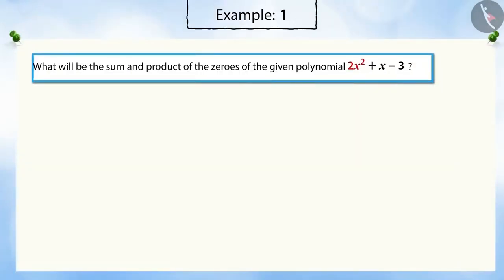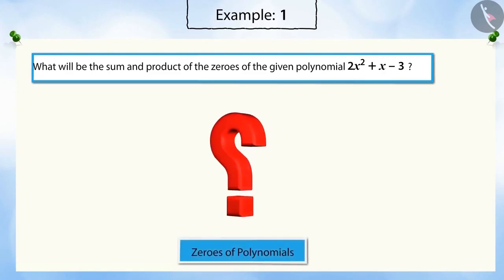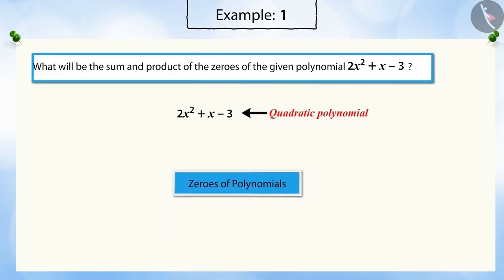What will be the sum and product of zeros of a given polynomial, 2x squared plus x minus 3? Can you say how many zeros this polynomial has? Correct answer! Because it is a quadratic polynomial, it can have at most two zeros.